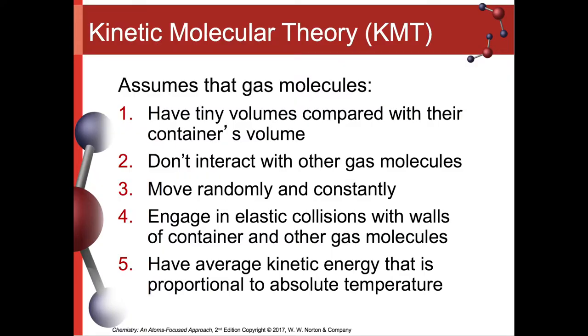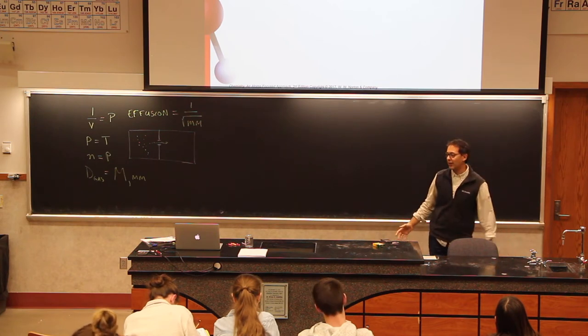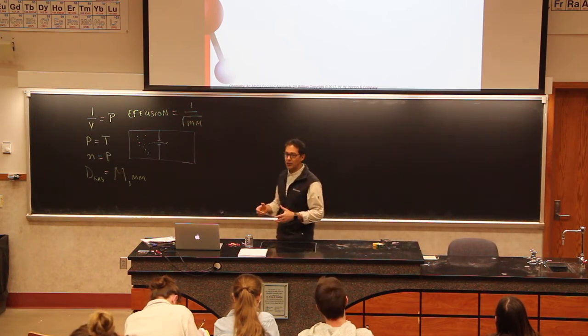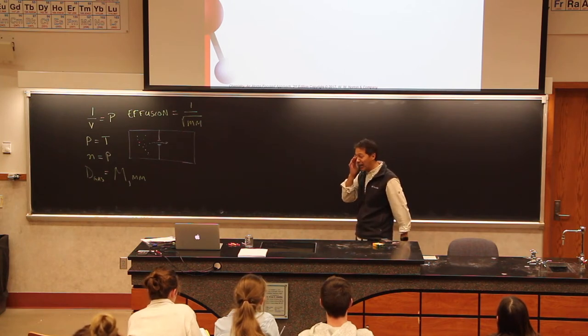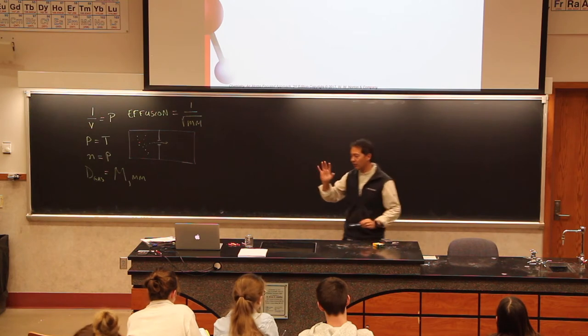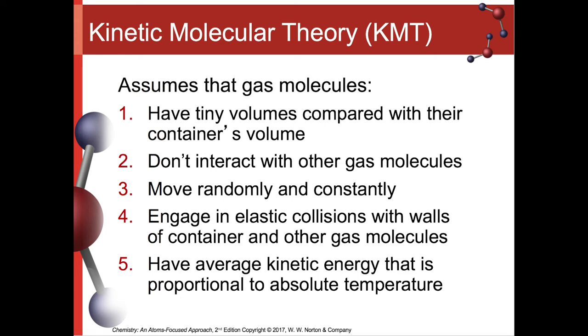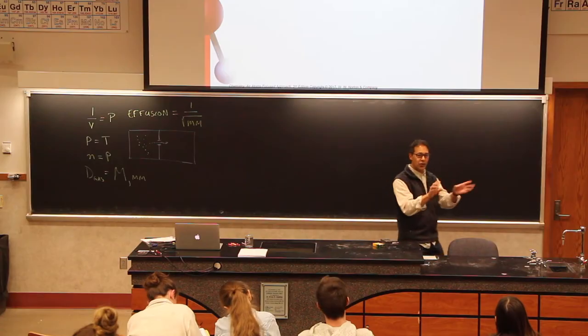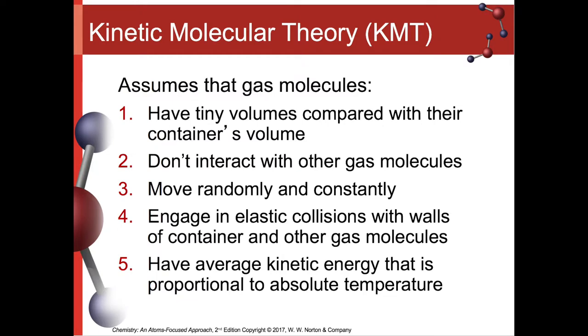The first rule is they have tiny volumes compared to their containers volume. So like we have air molecules in here, there's oxygen and nitrogen, but those molecules are very small compared to the size of the room. And because of that we don't really consider them as taking up much space. As I walk from one side of the blackboard to the other, I don't hit an oxygen atom right in the eye. They're very small and they don't really affect our calculations. Now they don't interact with other gases. So the oxygen and the nitrogen don't get together and do weird stuff. Those oxygen molecules and nitrogen molecules, they don't interact with each other. They're off doing their own thing.